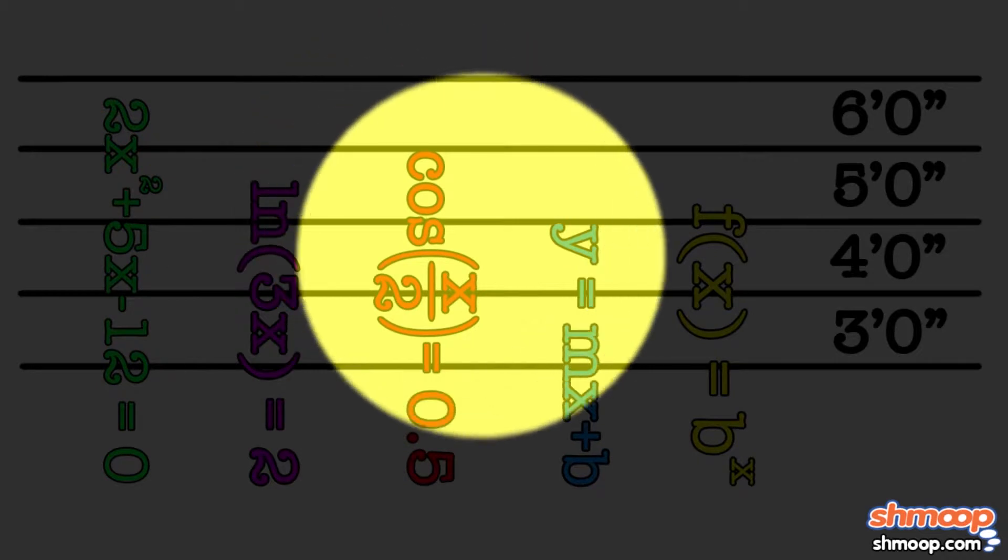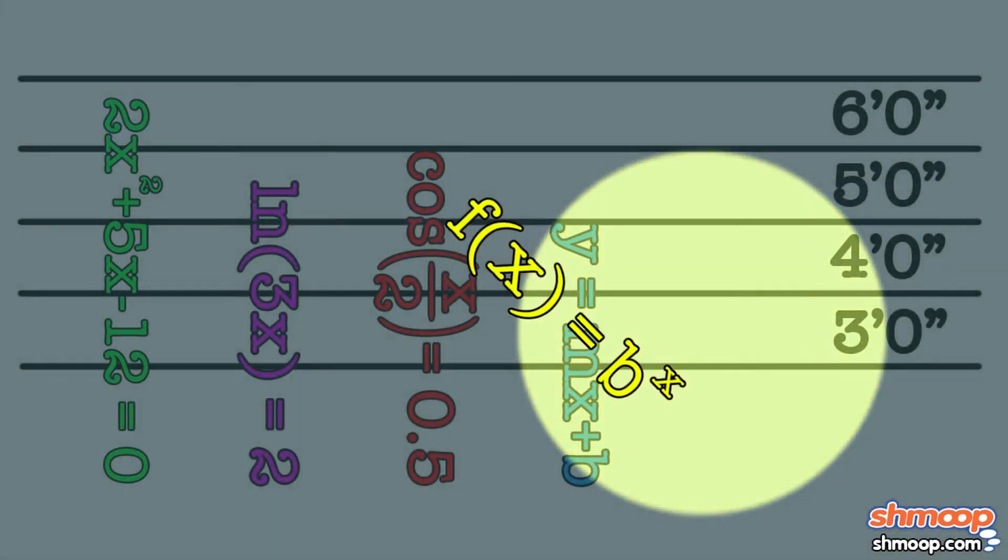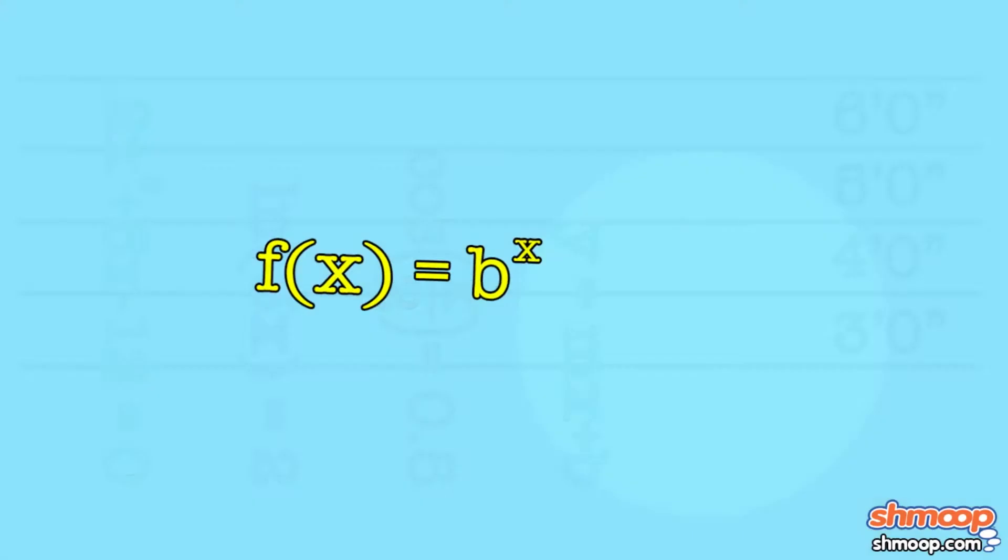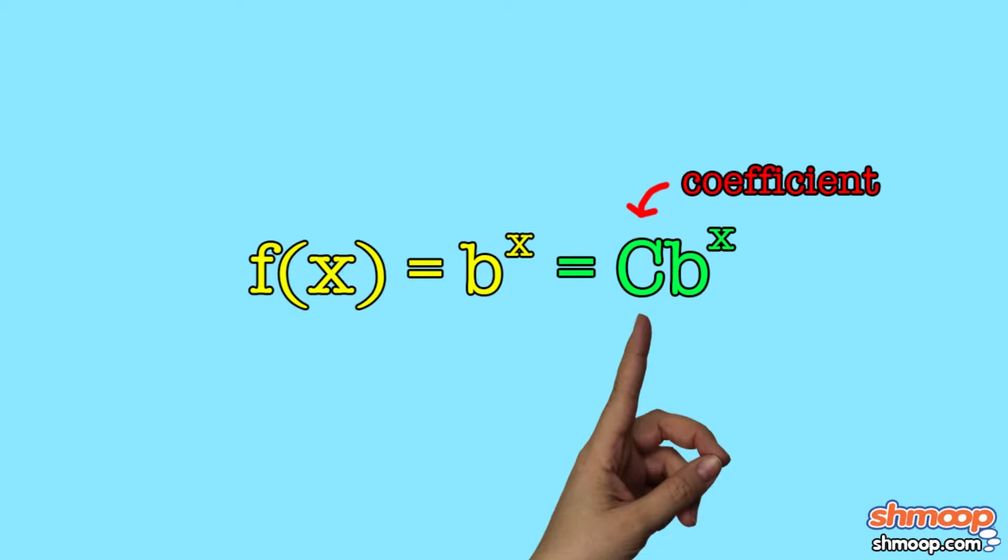An exponential function will usually be of the form f of x equals b to the x power, or cb to the x power, where c is the coefficient, like this thing right here.